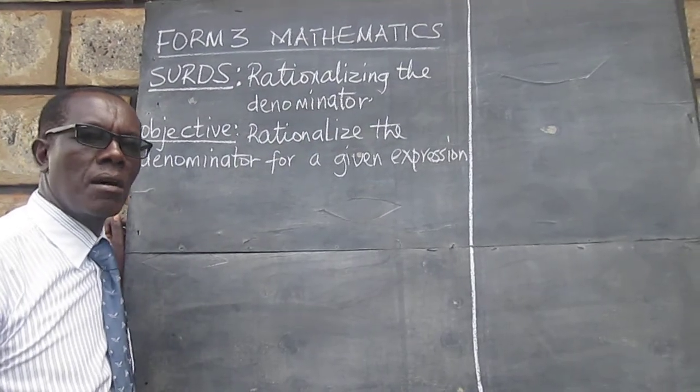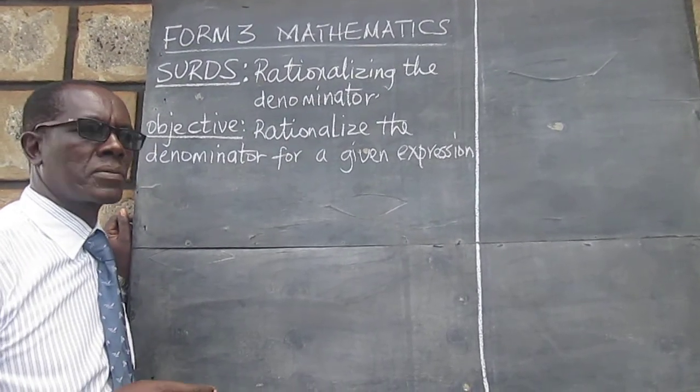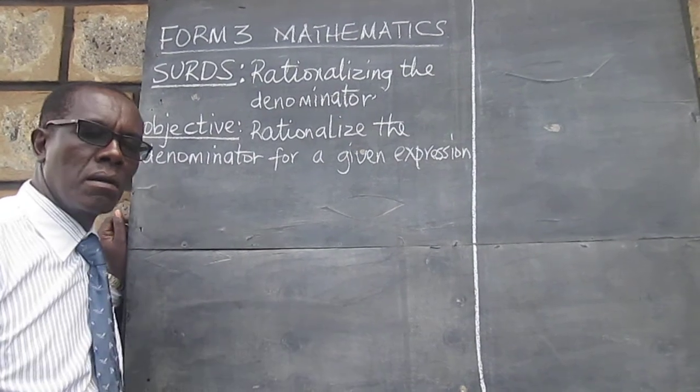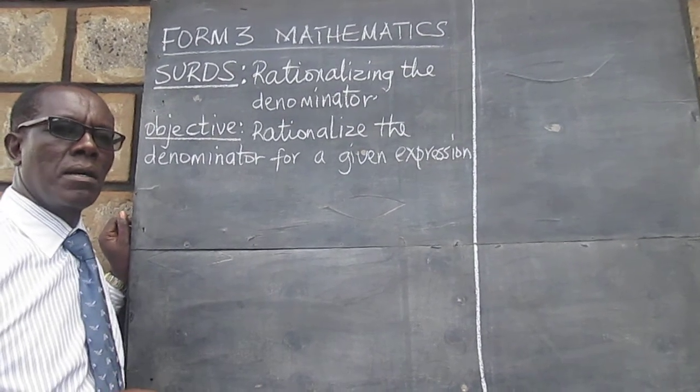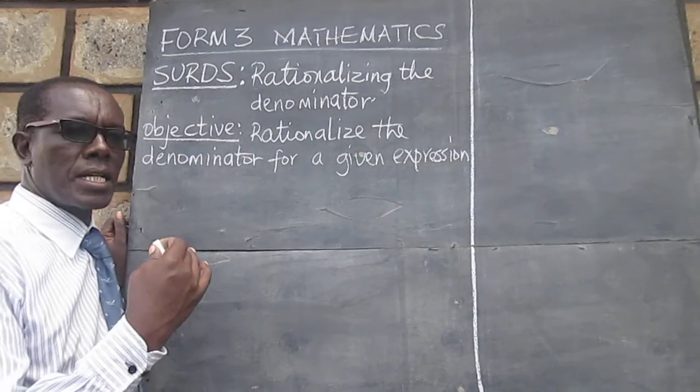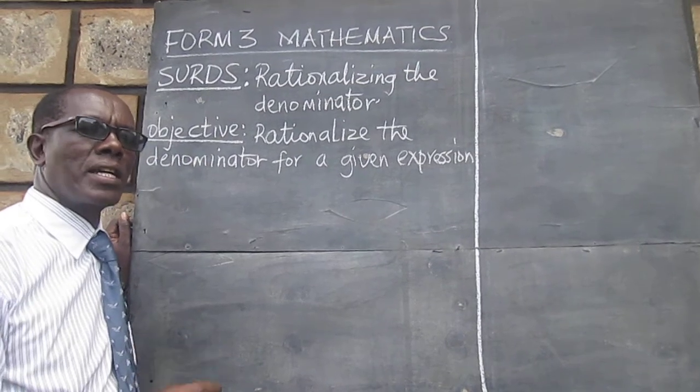For our lesson today you need to remember that when a surd is multiplied by itself, the square root sign will be eliminated.